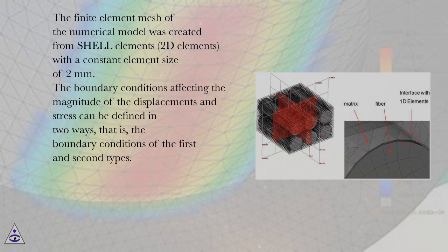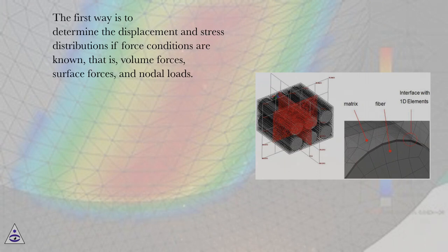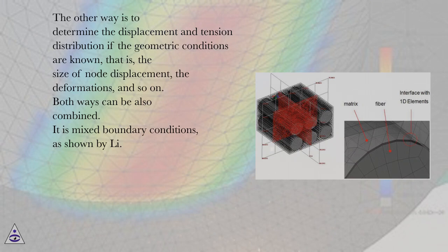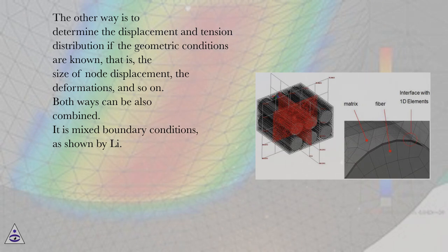The boundary conditions affecting the magnitude of the displacements and stress can be defined in two ways — the boundary conditions of the first and second types. The first way is to determine the displacement and stress distributions if force conditions are known, that is, volume forces, surface forces, and nodal loads. The other way is to determine the displacement and tension distribution if geometric conditions are known, such as the size of node displacement and deformations. Both ways can also be combined as mixed boundary conditions, as shown by Li.